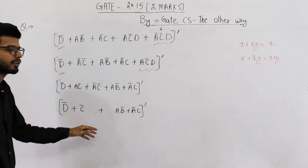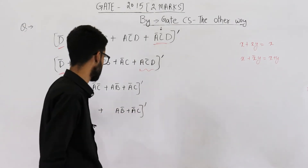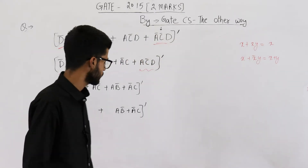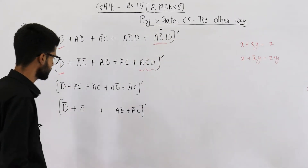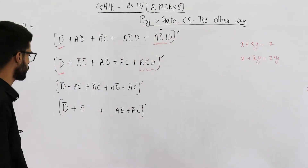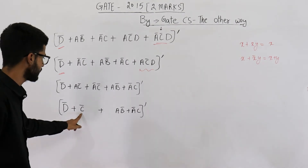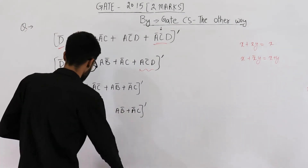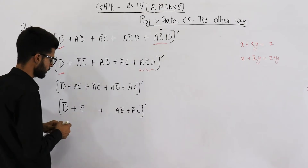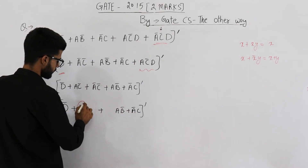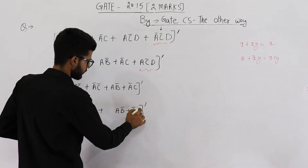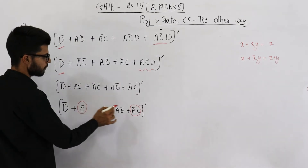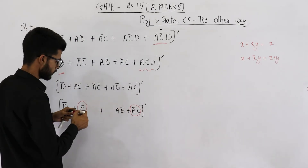Because c dot 1 is just c — rather, c complement dot 1 is c complement. So next, apply the absorption law on the remaining terms. On this term as well as on this term, so we will be left with c complement plus a complement.